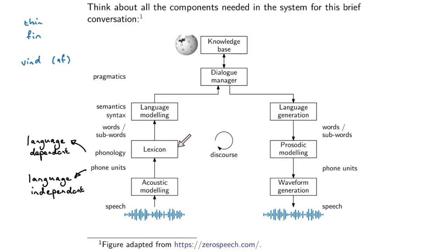If you have all these phonemes, the lexicon tells you how words are written in this particular language — the dictionary of words and the sequence of phonemes each word consists of. Out of the lexicon we have words and sub-words, which get processed through the language model. The language model tells you how words are strung together — syntax, the grammar of that specific language — and at an even higher level, semantics, relating to the meaning of words. All of this is encompassed in pragmatics, which deals with the context and social setting in which a specific discussion is occurring.